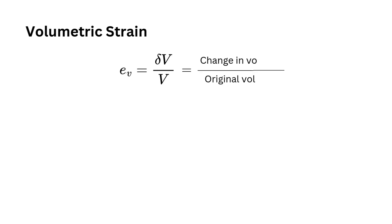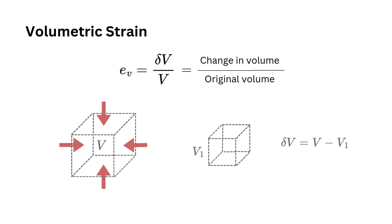Volumetric strain is defined as the ratio of change in volume to the original volume of a body. It is a dimensionless quantity expressed as the fractional change in volume, and represents how much the volume of an object changes under stress.